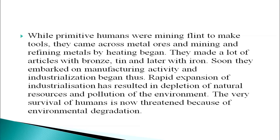Surplus crops were transported to other places and for transportation they discovered the wheel. Transportation became easier. Humans moved to newer places to raise new crops and also began to domesticate animals. While primitive humans were mining flint to make tools, they came across metal ores and mining and refining metals by heating began. They made a lot of articles with bronze, tin and later with iron. Soon they embarked on manufacturing activity and industrialization began. Rapid expansion of industrialization has resulted in depletion of natural resources and pollution of the environment, and the very survival of humans is now threatened because of environmental degradation.